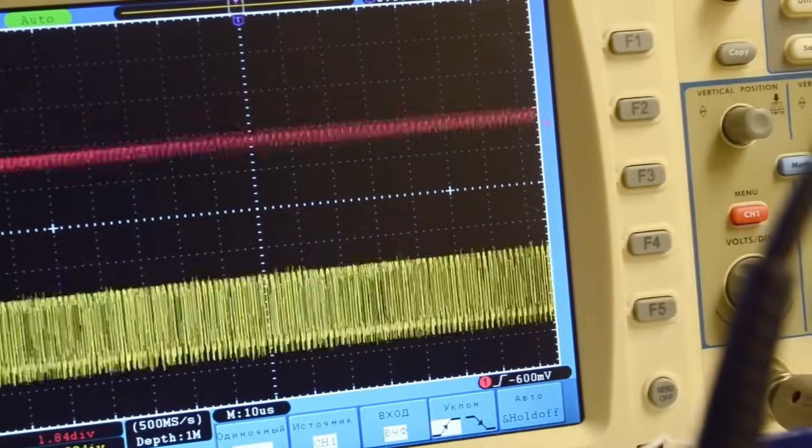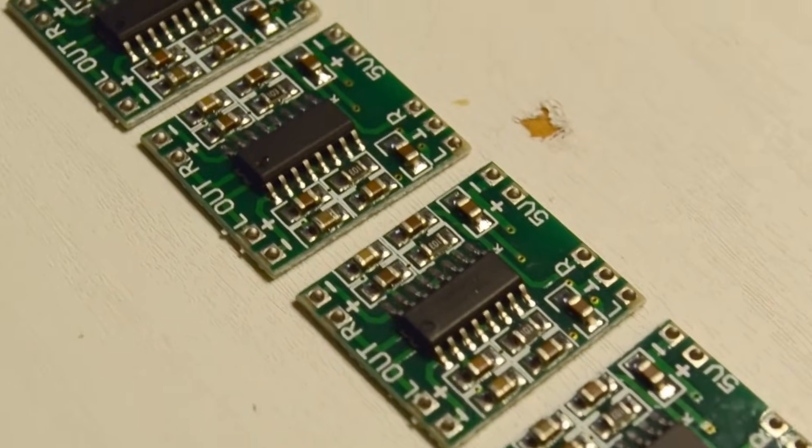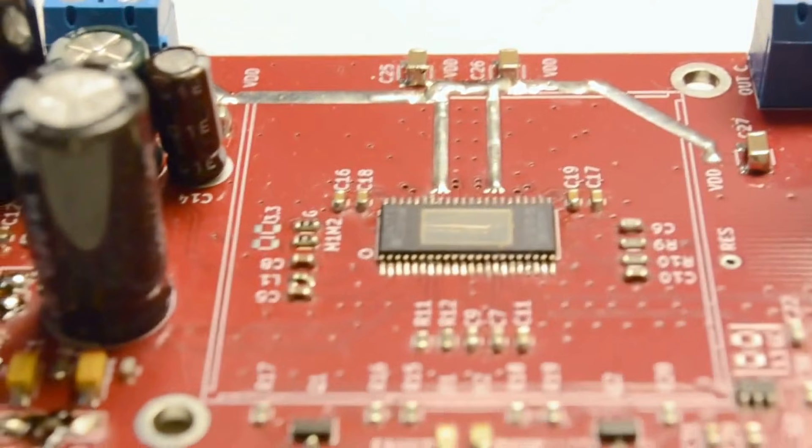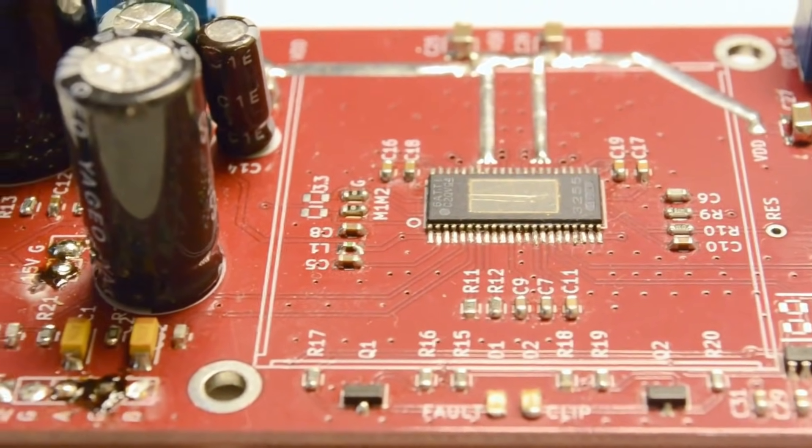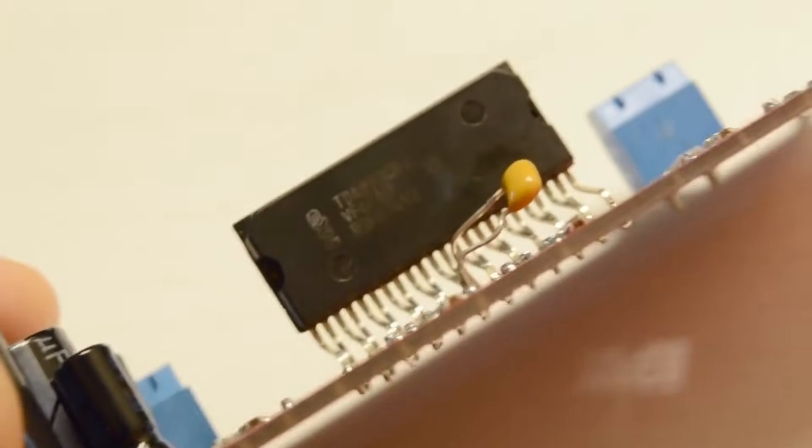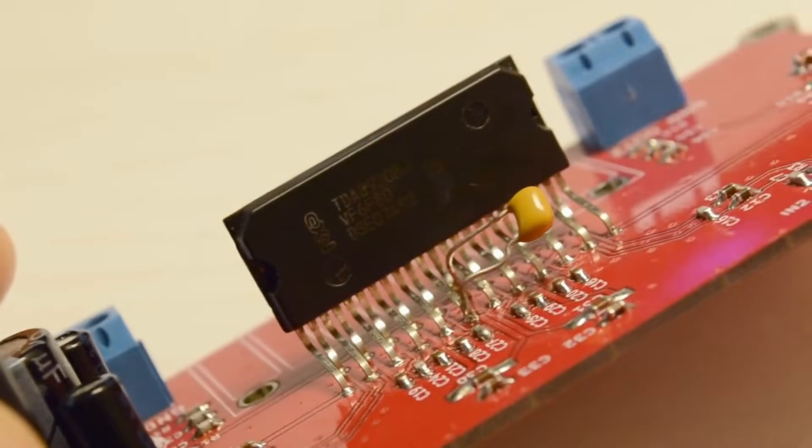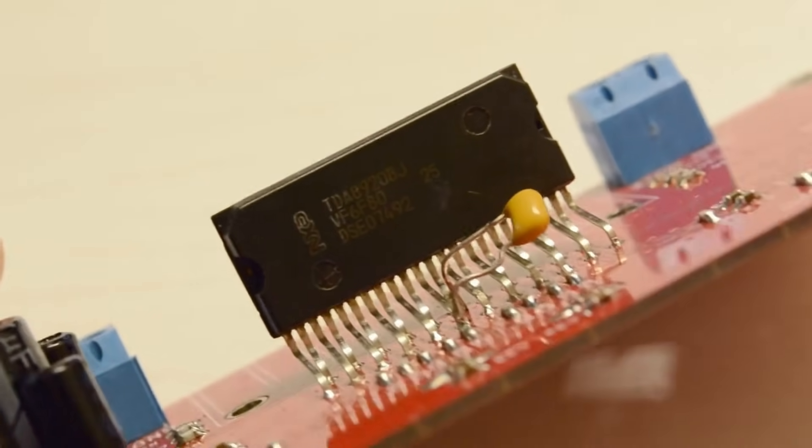For low supply voltage and small power, it's better to use ready-made class D amplifier chips, of which there are many available now. And you can choose the right option for any task. When assembling a class D amplifier with discrete components, it's better to use specialized driver chips to control the output transistors. The transistors themselves should be selected based on minimal resistance and with a margin for maximum voltage.